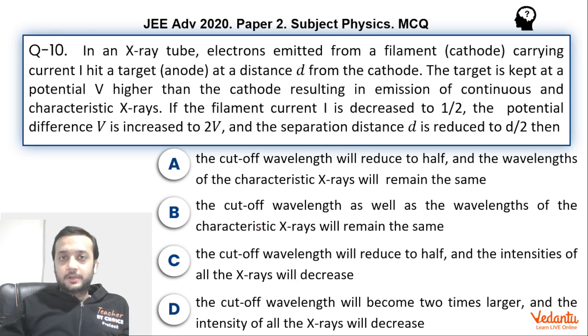This was based on multiple choice correct question. Compared to other questions in paper 2, I will say that this was fairly easy and very less ambiguous. Why am I saying very less ambiguous? That we will figure out very shortly. So let's see what is happening over here.